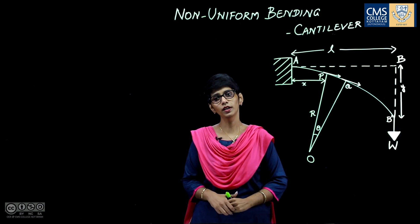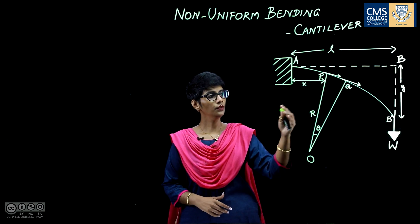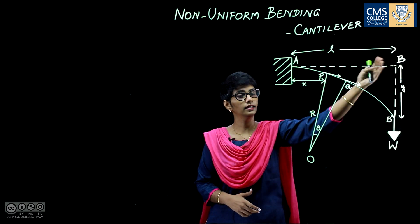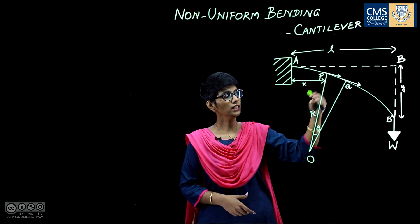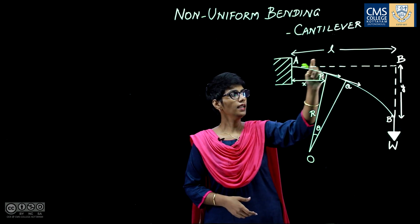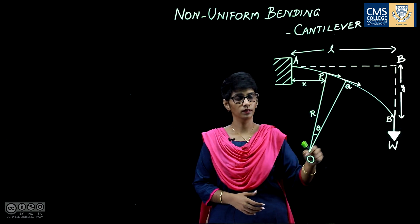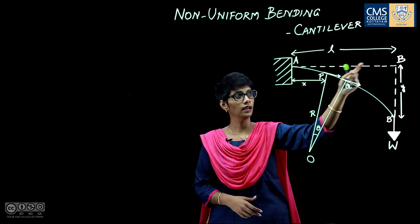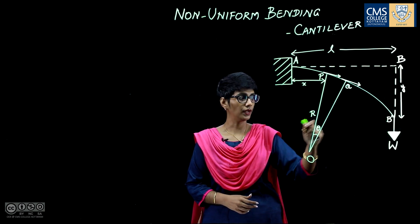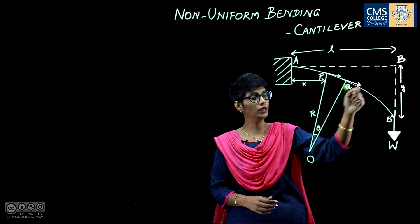In this video we are going to find the depression at the free end when it is loaded. We are considering a beam of length L. One end is fixed and the other end is kept free. As we load the free end, the beam starts bending. Let AB be the neutral axis of the beam. When we put the load W, the neutral axis changes to AB prime due to bending. We can see a depression at the free end from B to B prime, taken to be Y.